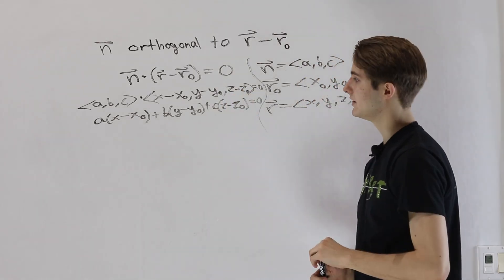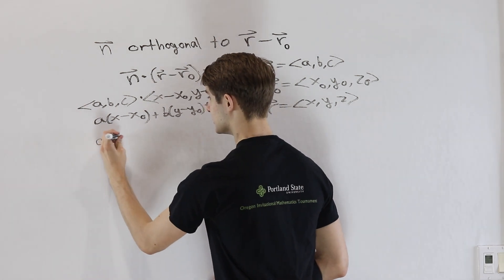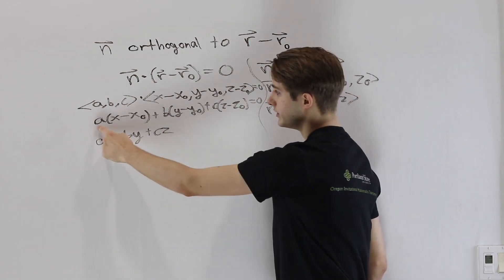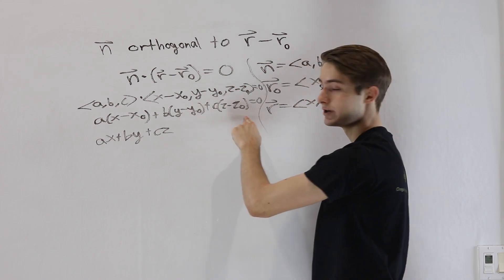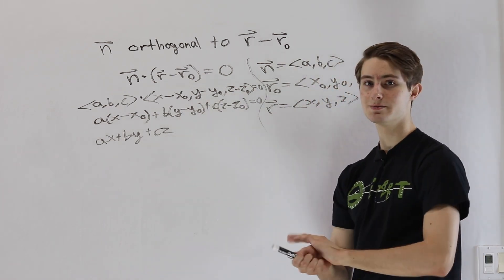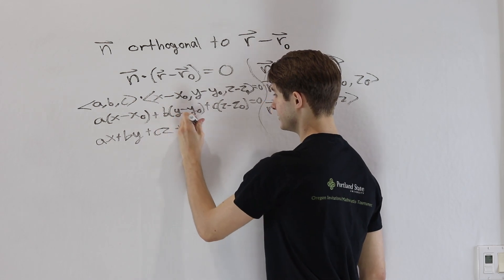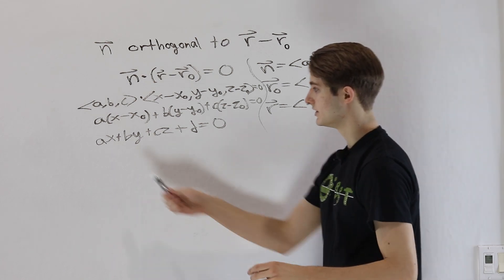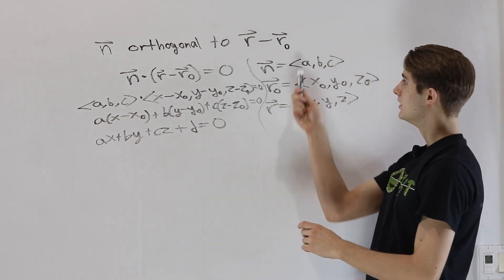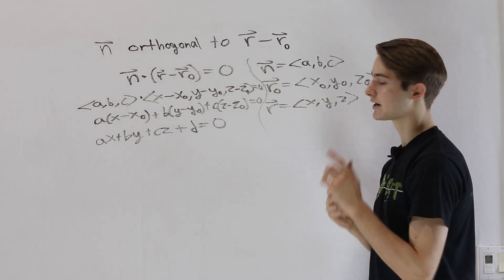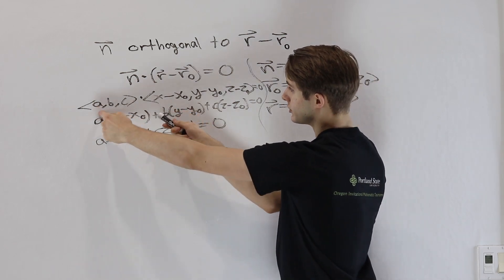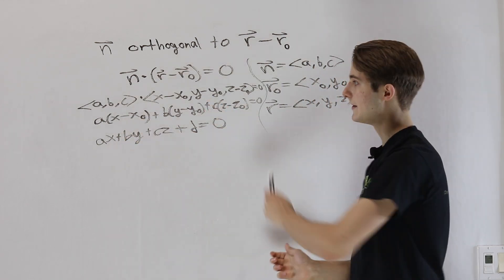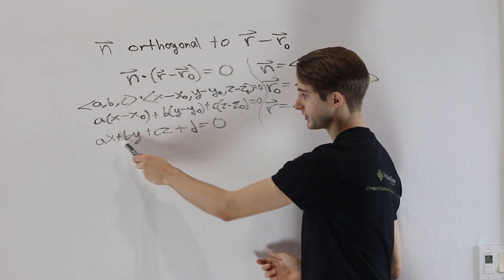If we expand this out, we get Ax + By + Cz from those terms, and then the constant terms — minus A·x-naught, minus B·y-naught, minus C·z-naught — which we can combine into a single constant d, giving Ax + By + Cz + d = 0. Notice the coefficients of x, y, and z are the same as the components of the normal vector. That comes from the fact that the dot product multiplies the normal vector's x component by the vector's x component, and so on.